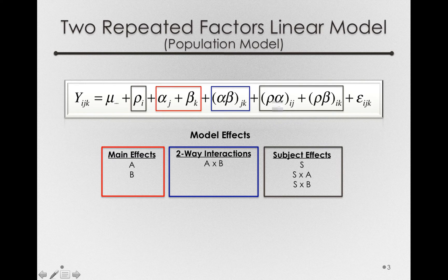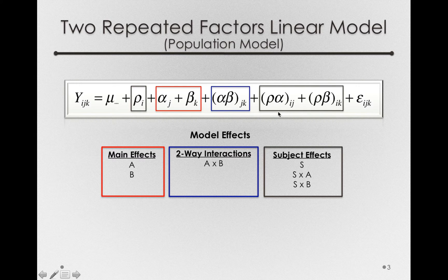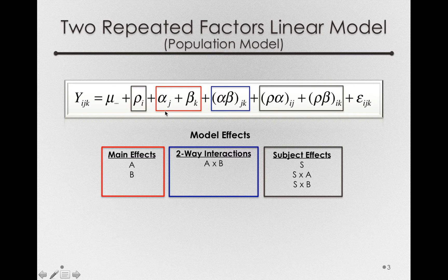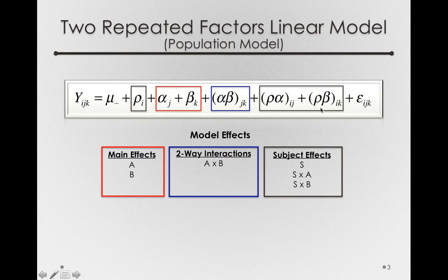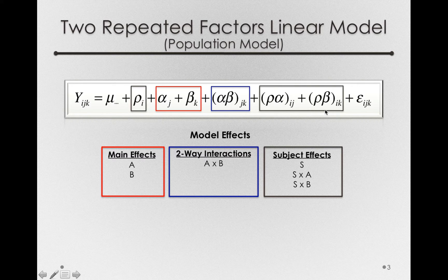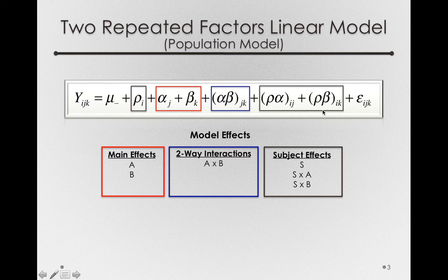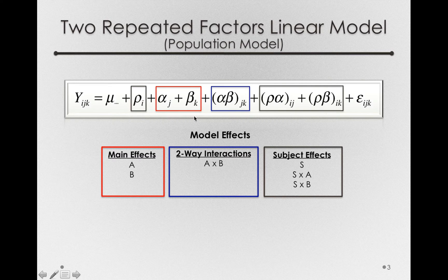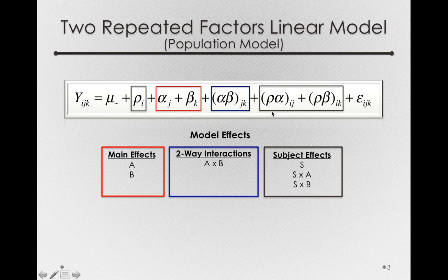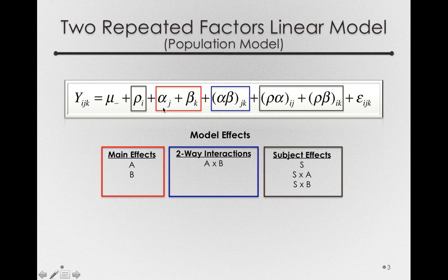That is, the degree to which subjects differ in their response to factor A is a meaningful error term relative to the error term relative to the B effect. So, this will be the error term for beta K, and row by alpha will be the error term for alpha J.